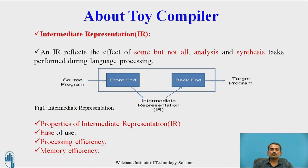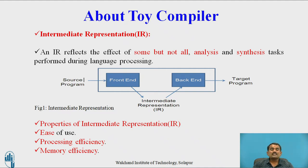In the previous video, we discussed about forward references, in which we used the term IR — that is, IR is an Intermediate Representation. When we need to get the intermediate representation, it means after using the analysis phase. The analysis phase contains lexical rules, semantic rules, and syntax rules. After applying these rules to the given problem statement, we generate code, which we call intermediate representation. That IR reflects the effect of some, but not all, analysis and synthesis tasks performed during language processing.